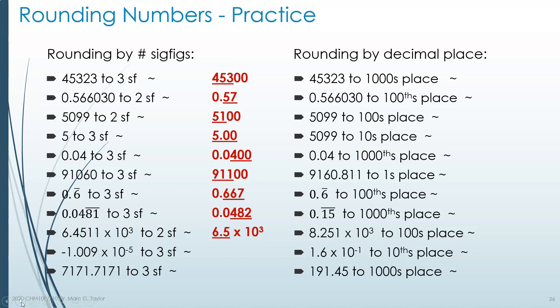−1.009 × 10⁻⁵ to three sig figs. We keep the first three significant digits, giving −1.01 × 10⁻⁵.